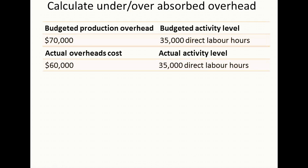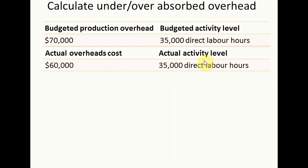So let's look at an example. The company has a budgeted production overhead of 70,000, a budgeted activity level of 35,000 direct labor hours, actual overhead costs of 60,000, and the actual activity level is 35,000 direct labor hours.